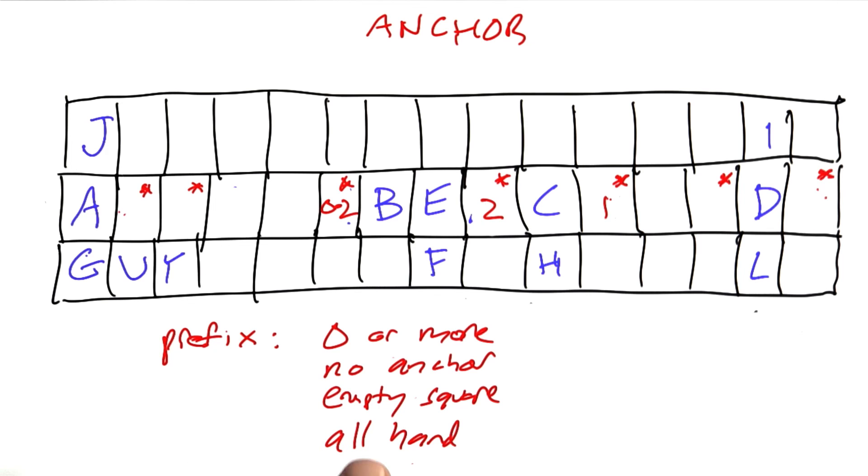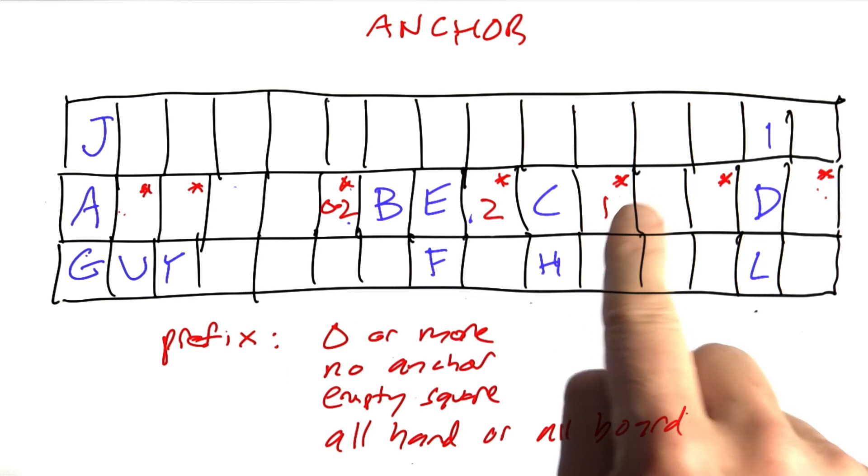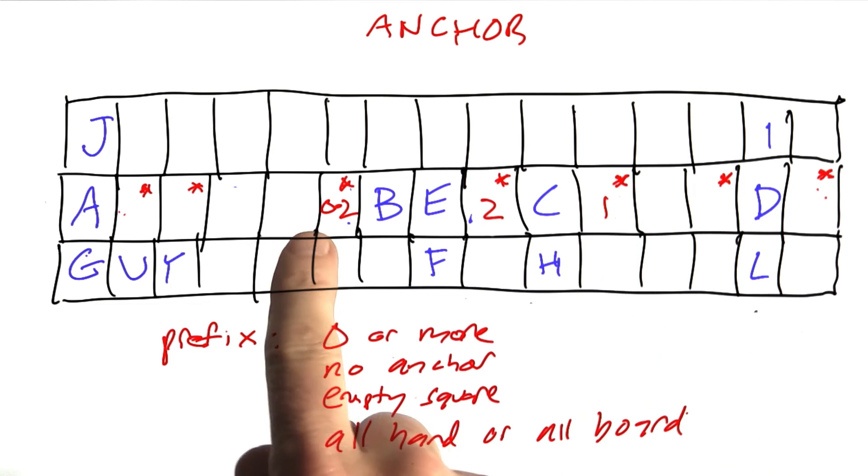And so we see that a prefix, either the letters come all from the hand or they come all from the board. Now what I want you to do is for the remaining anchors here, tell me what the possible lengths are. So either put a single number like this or a range of numbers, number dash number.